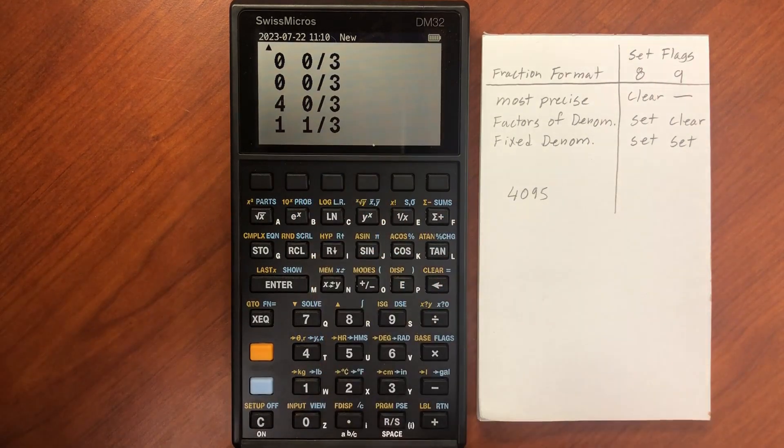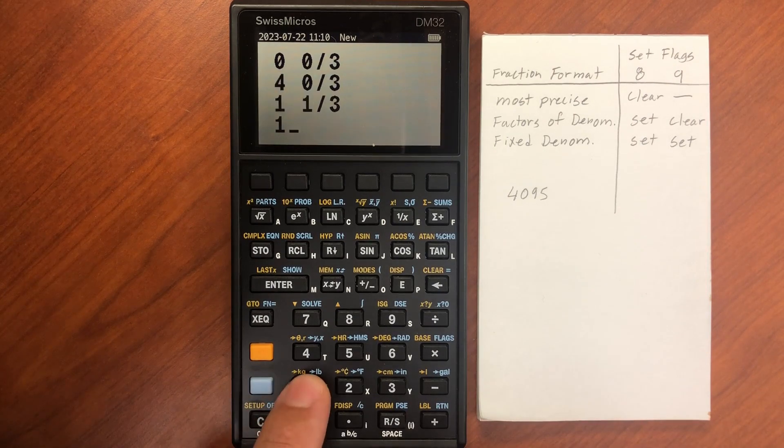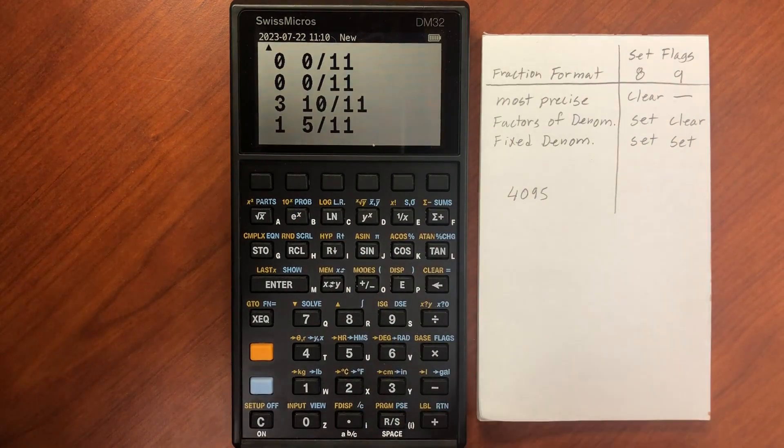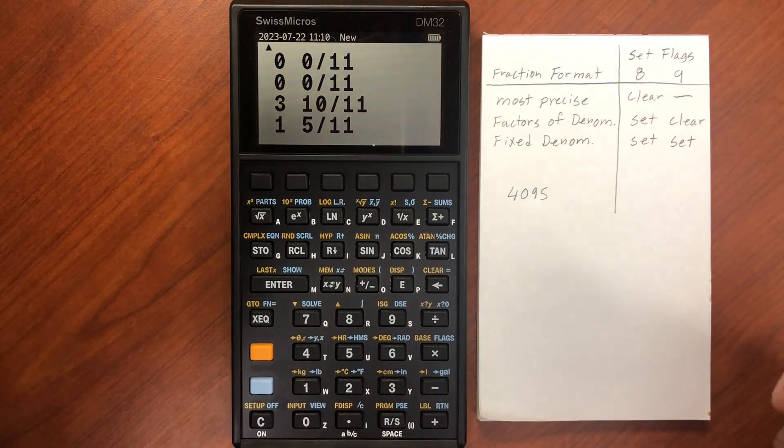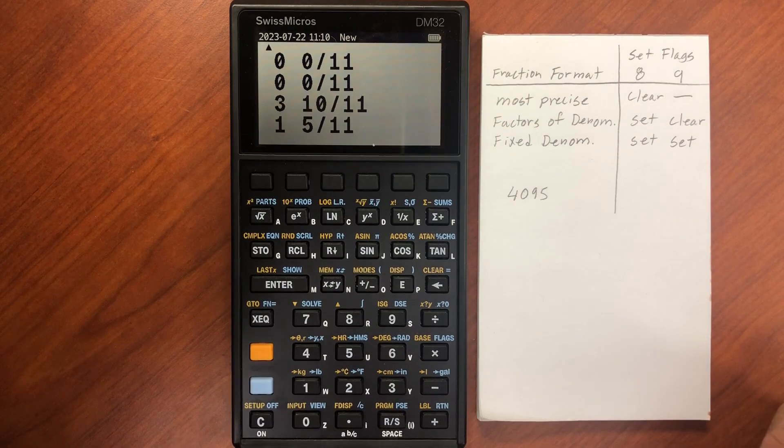And now we also want to set flag 9. So I entered in 3 as my base. But let's say I enter in 11ths. Now, any fraction that I enter will always show some base value of 11ths. Of course, it won't be accurate, but it will get as close as it can.